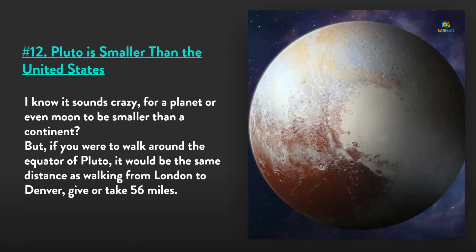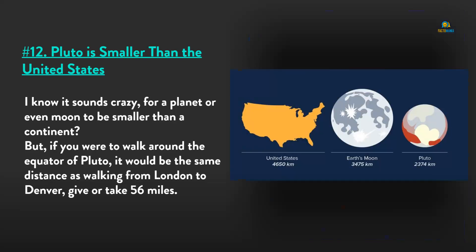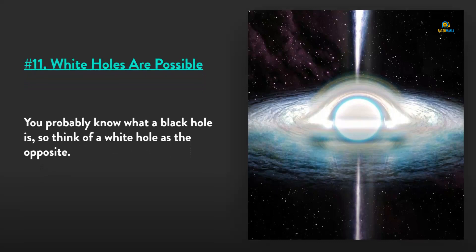Number 12: Pluto is smaller than the United States. I know it sounds crazy for a planet or even moon to be smaller than a continent, but if you were to walk around the equator of Pluto, it would be the same distance as walking from London to Denver, give or take 56 miles.